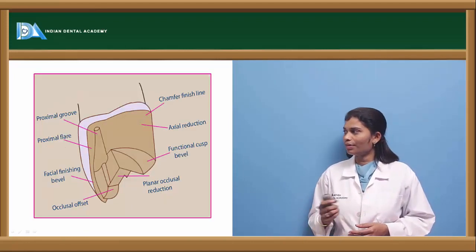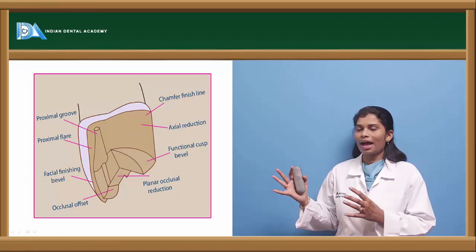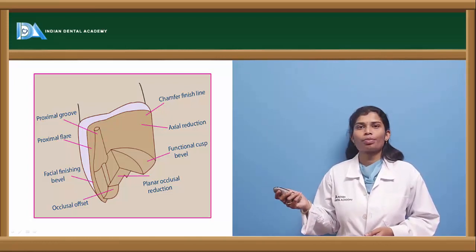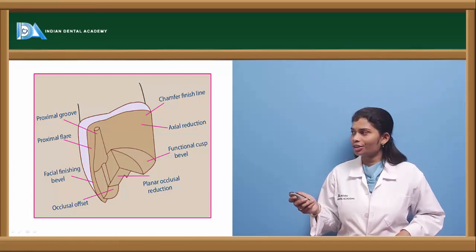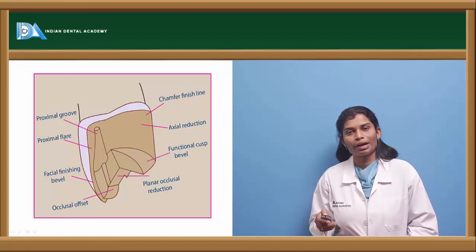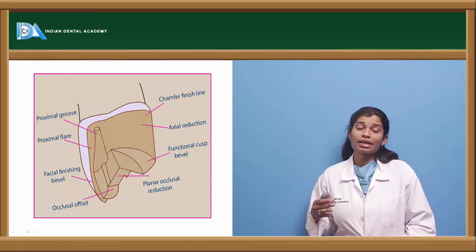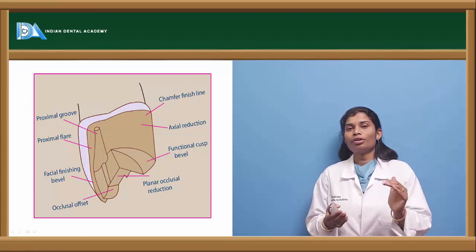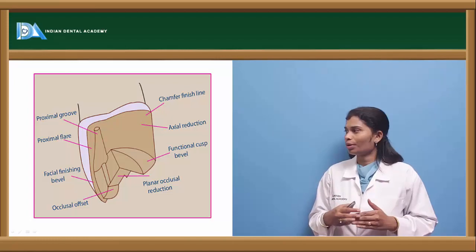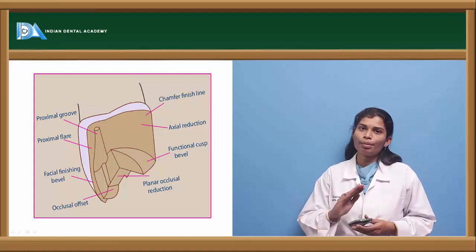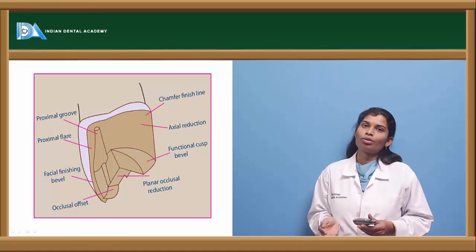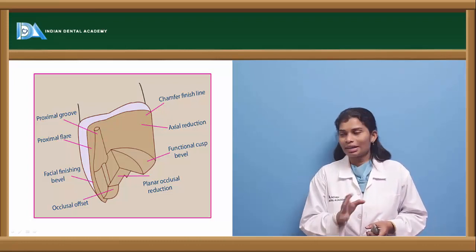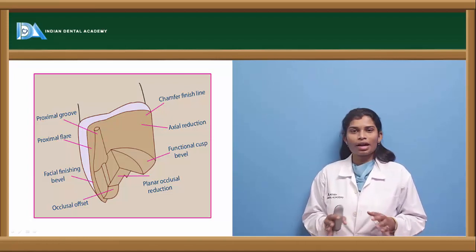Looking at the final preparation: the proximal groove is placed next to the proximal flare — together they help retention. The facial finishing bevel aids proper metal adaptation. The occlusal offset acts as a secondary retentive feature and stop for retention. Greater reduction in that area supports structural durability. The chamfer finish line ensures proper margin adaptation. Axial reduction incorporates adequate restorative material, and the functional cusp bevel strengthens the restoration in the area of function.